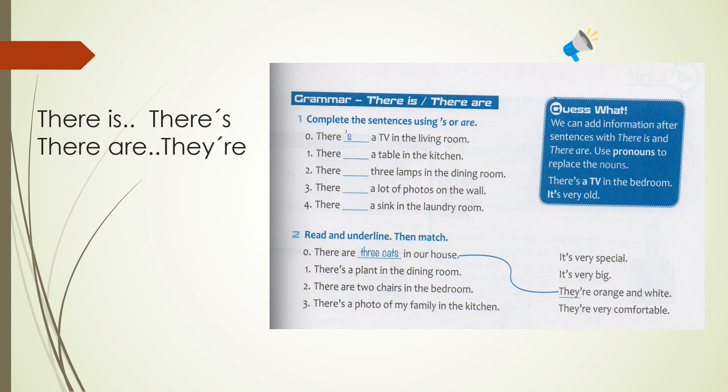Number 1, there is a plant in the dining room. ¿Qué voy a subrayar allí? La parte que me dice la cantidad, a plant, una planta. ¿Y dónde voy a buscar para unirlas? Si me queda vacío, it's very special, it's very big, they are very comfortable. ¿Qué dice allí? Es muy especial, es muy grande, son muy cómodas. Yo no creo que las flores sean cómodas. En este caso la voy a unir con it's very special. Y voy a subrayar a plant.